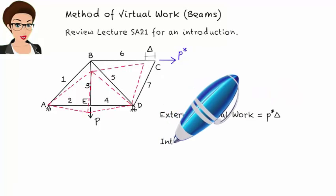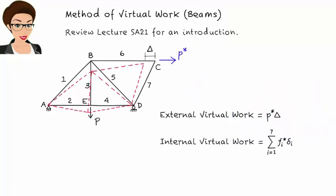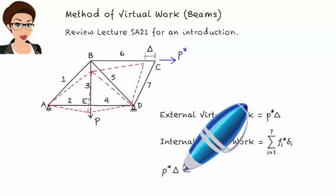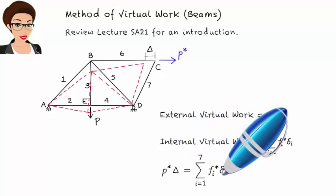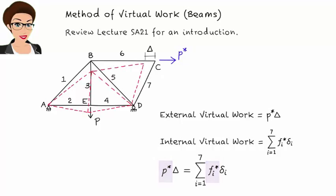And the internal virtual work equals the sum over all members. Here, F star I is the force in member I due to the virtual load, and delta I is the elongation of the member due to the real load. According to the method of virtual work, external virtual work equals internal virtual work. P star is the applied virtual load, F star I is virtual member force due to P star. This is displacement due to the real load and this is member elongation due to the real load.